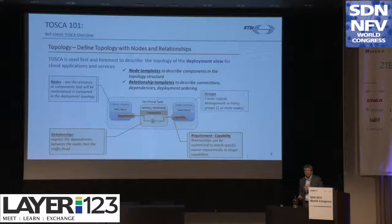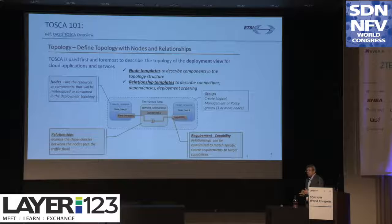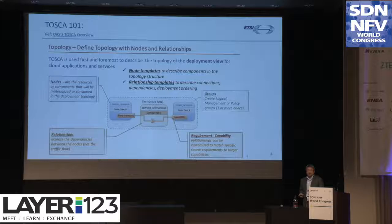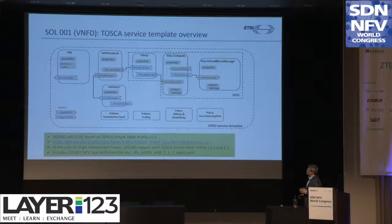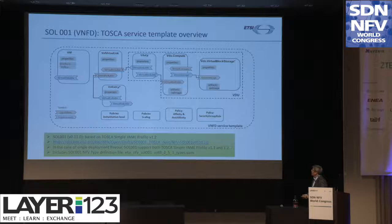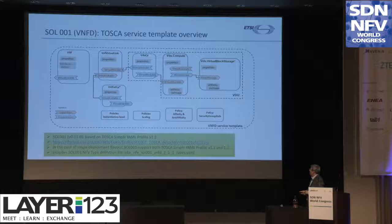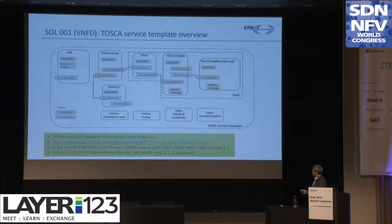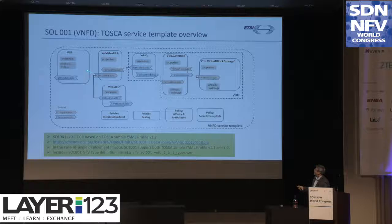The next part of the presentation covers the node types that ETSI NFV is developing. When you look at SOL001 — the VNF network service descriptor and VNF descriptor — we use all the same TOSCA concepts but we define our own unique types. Jumping back to the ETSI SOL001 VNF descriptor parts: this figure is based on the latest draft, version 0.11.0, which is publicly available. Our specifications are built on top of OASIS TOSCA Simple YAML version 1.2, the latest draft, and due to compatibility needs, we also support 1.1 for single deployment.